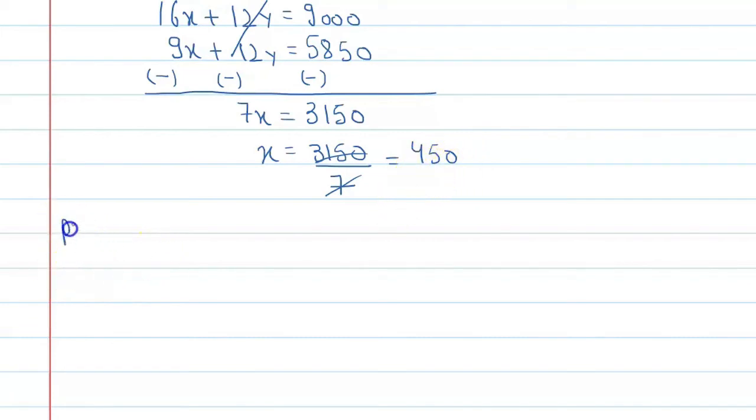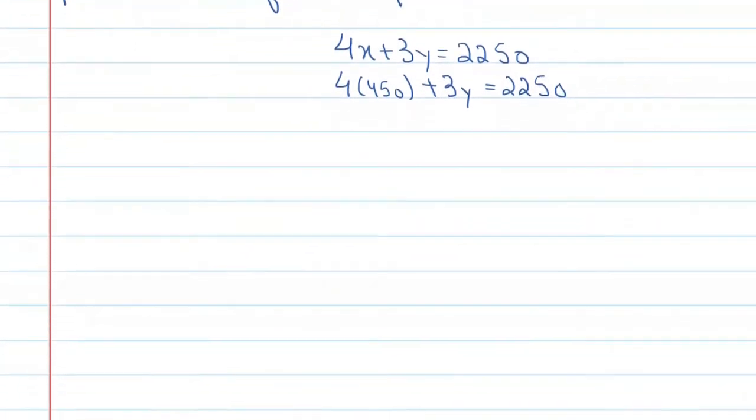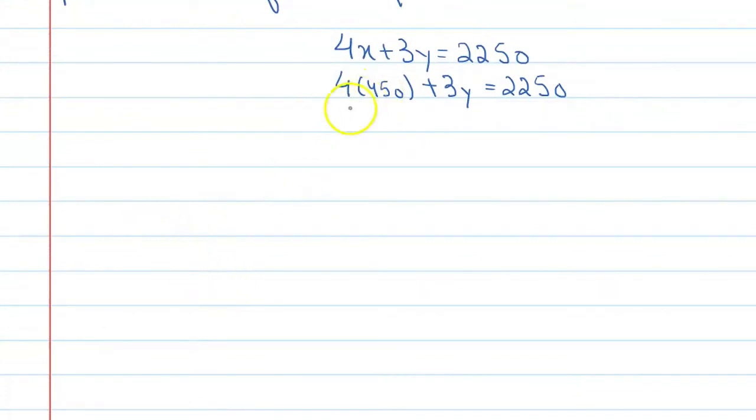Now put the value of x in equation 1. So equation 1 is 4x plus 3y equals 2250, and x equals 450. We will write it here: 4 times 450 plus 3y equals 2250.